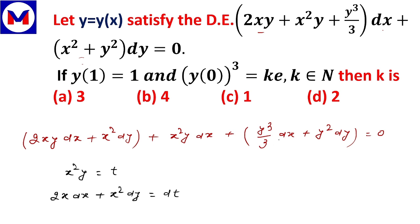For the term y³/3, we substitute it as u. Then differentiating: the 3 cancels, and y²·dy becomes du.